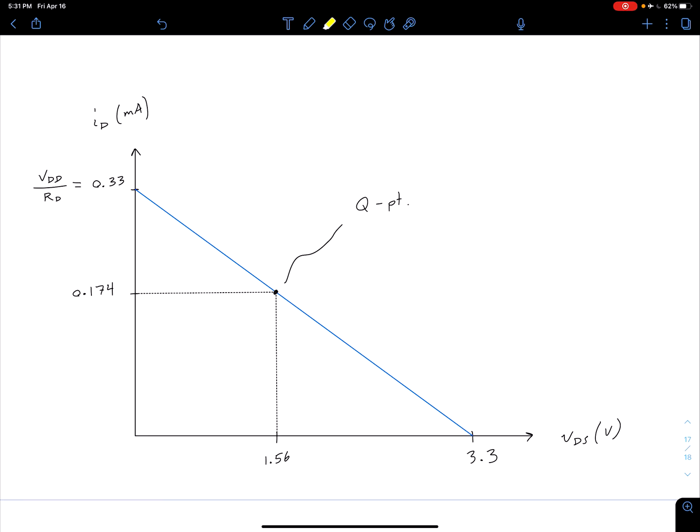So we had also found our Q point was at an operating current of 0.174 for our drain current, and 1.56 for our drain-to-source voltage.